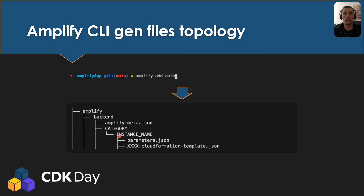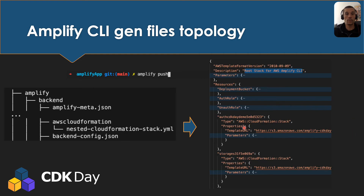In that subfolder you will find two really important files: the CloudFormation template generated by the command line, and the parameters.json file containing the CloudFormation stack parameters that are going to be passed to the template at execution time.